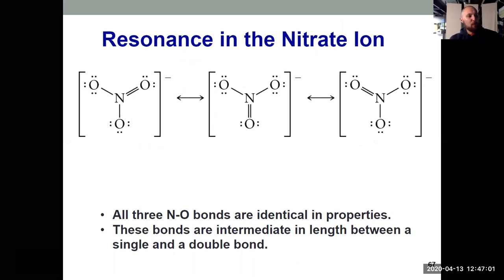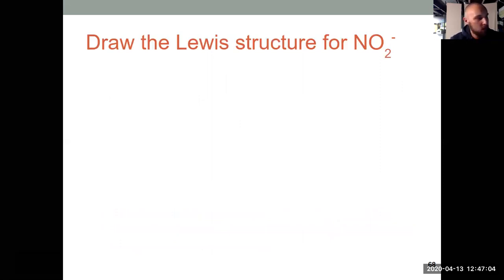I put a practice slide in here to get this idea down. You should try drawing the Lewis structure for nitrite NO2 minus. Pause the video. Give that one a shot. Don't forget to add in the extra electron because this is a polyatomic ion with negative charge. So you should be working with 18 electrons total.